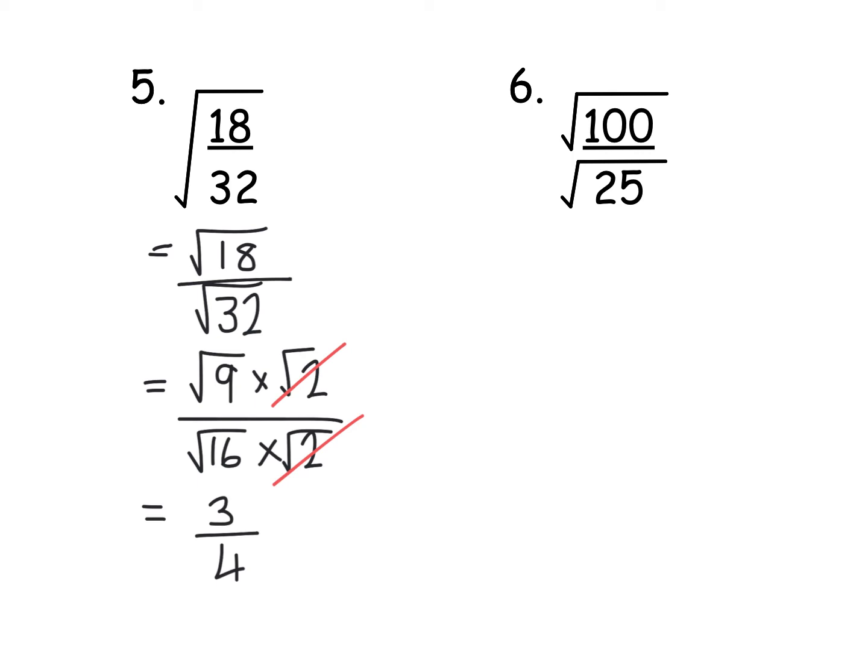Now, there was another way. I could have just simplified that fraction old style and then said, the square root of 18, 18 and 32 are both in my 2 times table. So that would be 9 over 16. And then I could have done, well, the square root of 9 is 3 and the square root of 16 is 4 and got to the 3 quarters quicker.